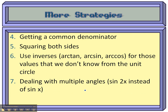Sometimes you've got to get a common denominator, and maybe you don't even know that you have to — because something like tangent and secant are already fractions: tangent is sine over cosine, and secant is 1 over cosine.